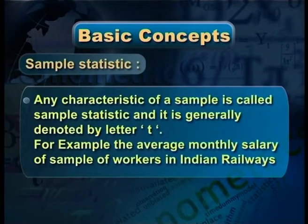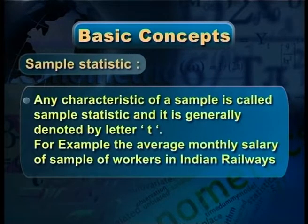Sample statistic: any characteristic of a sample is called sample statistic and it is generally denoted by small t. For example, the average monthly salary of a sample of workers in Indian railways denoted by small t is the sample statistic. We are taking 500 as a sample figure; the total figure is 50,000 which is the population. So the average salary of 500 workers is small t, and the average monthly salary of 50,000 workers is theta.